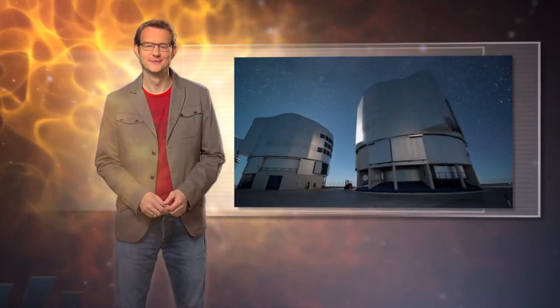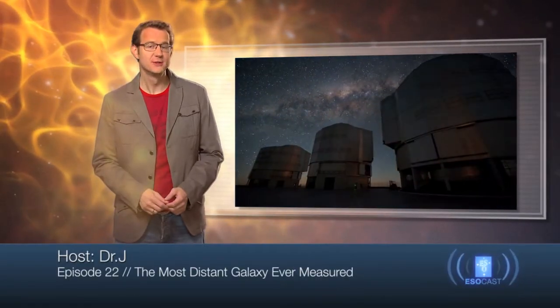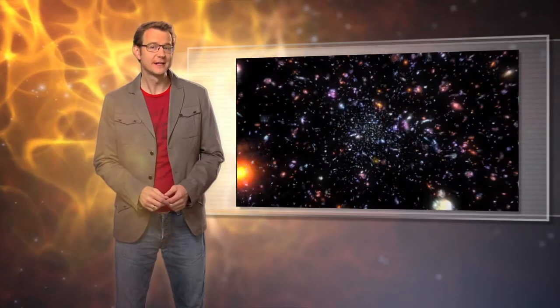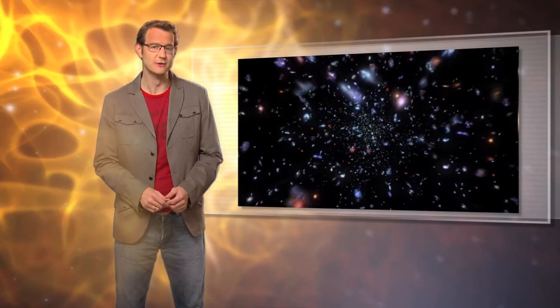Hello and welcome to the ESOcast. In this episode, we're going to find out how a team of astronomers used ESO's Very Large Telescope, the VLT, to confirm that a galaxy that had previously been spotted in images from the NASA-ESA Hubble Space Telescope is in fact the most distant object that has ever been identified in the Universe.